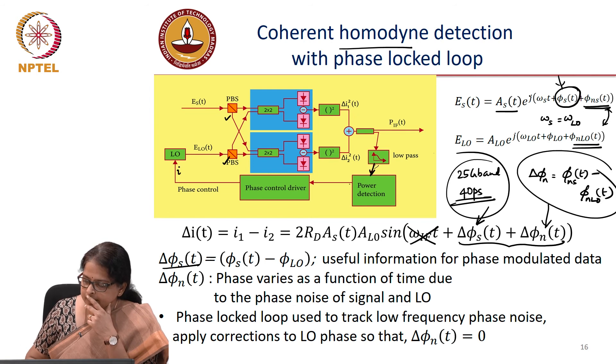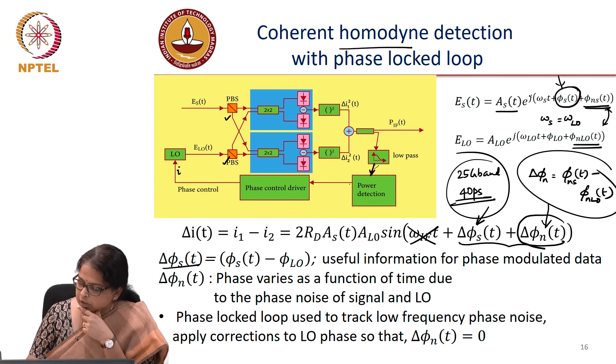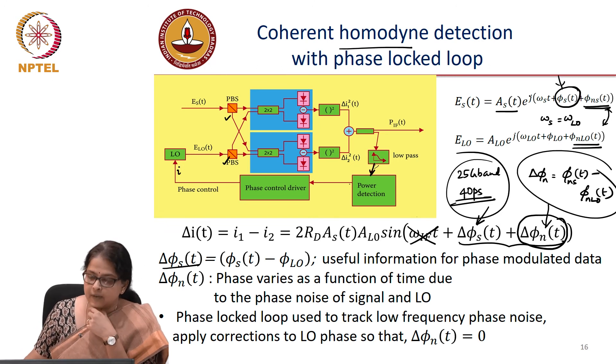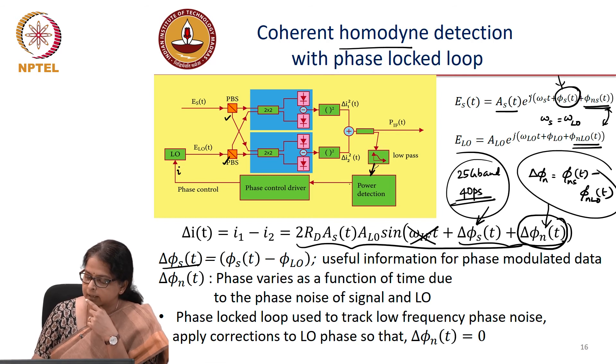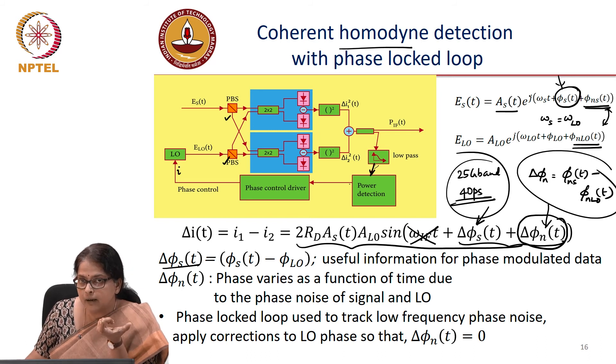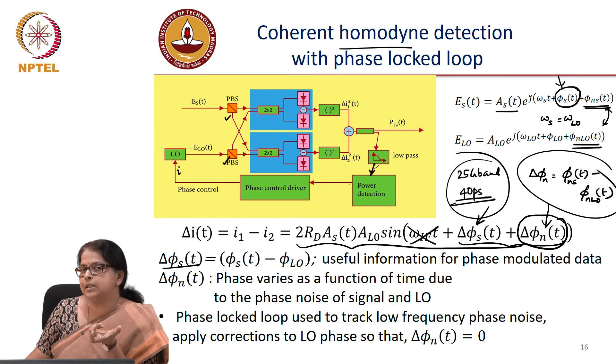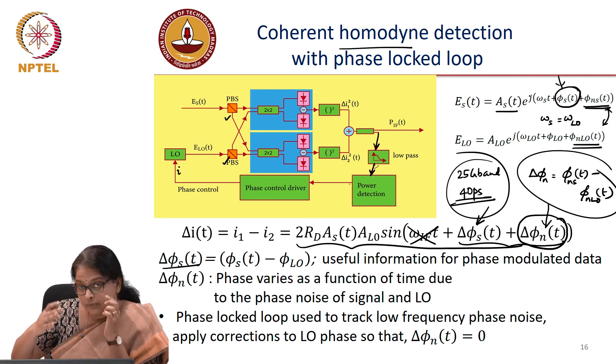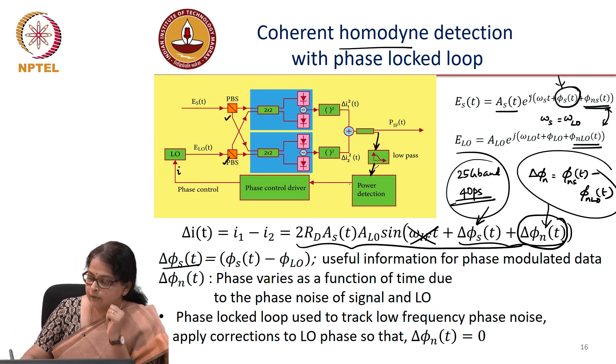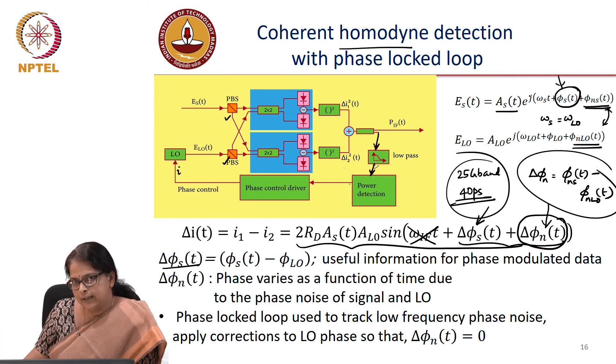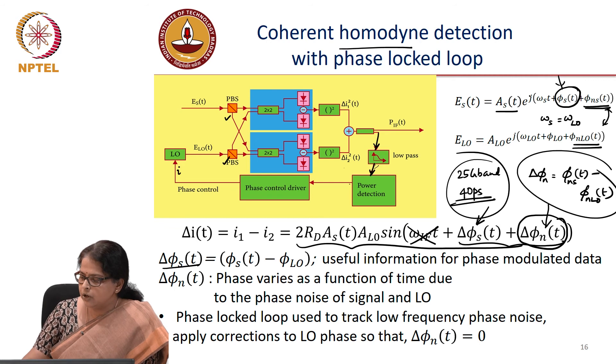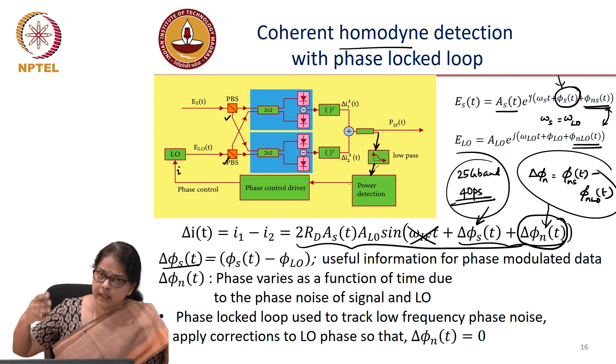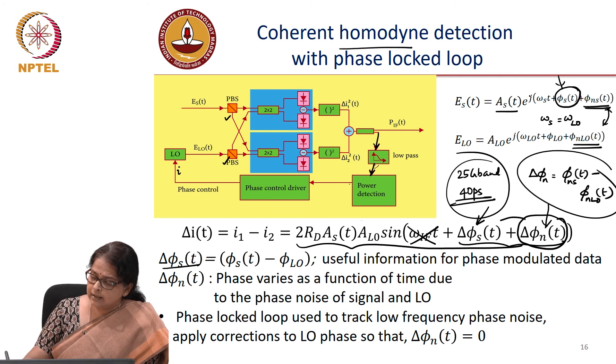So the point that we are trying to make is this phase noise, if we can extract the phase at the output, which is possible because the strength of this actually is directly proportional to the delta phi s. So if we can extract the phase of the output and do a low pass filter on it, which is what is shown here in this block diagram, the low frequency components are corresponding to the phase fluctuations of the laser itself. And of course the highest frequency components are corresponding to my data.